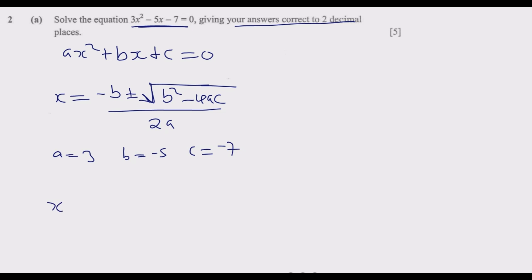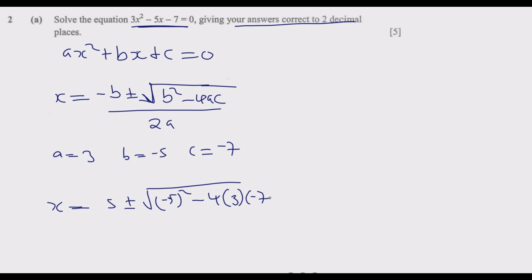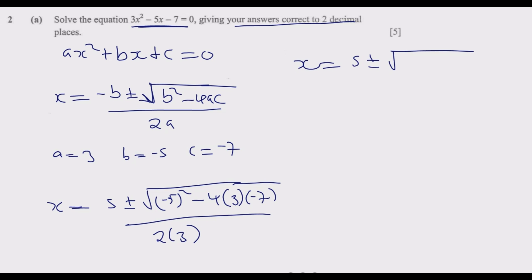Substituting into the formula: b is negative 5, so negative times a negative gives a positive, giving us 5. Then plus or minus the square root of b², which is negative 5 squared, minus 4 times a times c, all over 2 times a. Next we just expand.